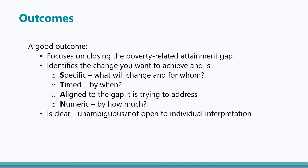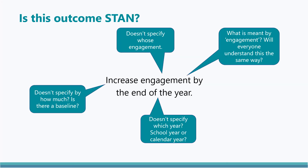It is important that the language used in the outcome is unambiguous. Providing an operational definition of potentially ambiguous words, such as 'engagement', is a helpful way of avoiding ambiguity. This is an example of an outcome that lacks a sufficient level of detail, and it will be difficult to determine whether or not this outcome has been successfully achieved as a result. For example, how much of an increase does the school consider a successful outcome? What level of increased engagement does the school hope to achieve? What is meant by engagement, and is there consistency across the team in their understanding? There is a risk of ambiguity when using this term without an operational definition.